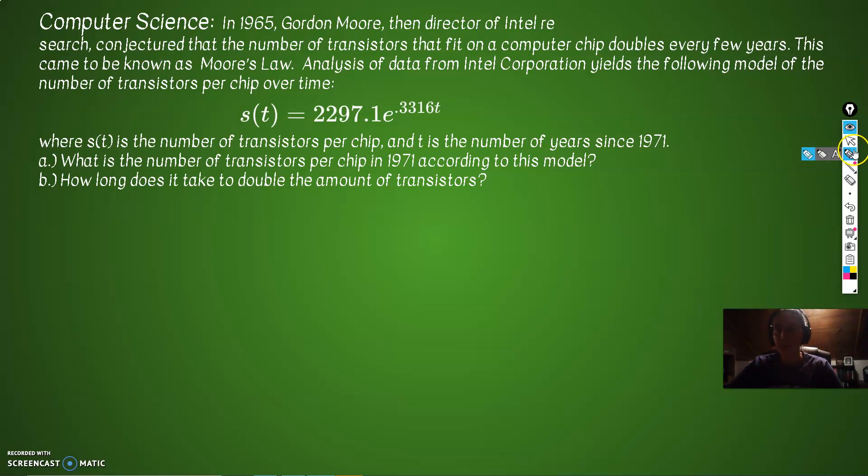Our last example is computer science. So in 1965, Gordon Moore, then director of Intel Research, conjectured that the number of transistors that fit on a computer chip doubles every few years. This came to be known as Moore's Law. Analysis of data from Intel Corporation yields the following model of the number of transistors per chips over time. S sub T equals 2297.1 times E to the 0.3316T, where S sub T is the number of transistors per chip and T is the number of years since 1971. That will come in handy.